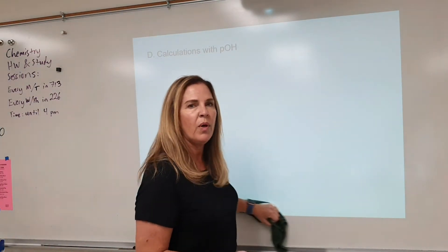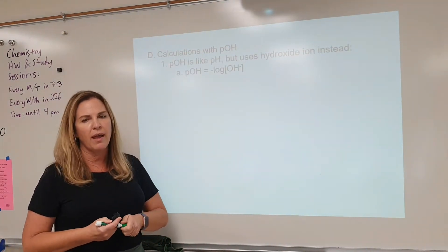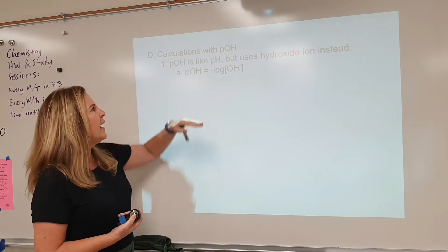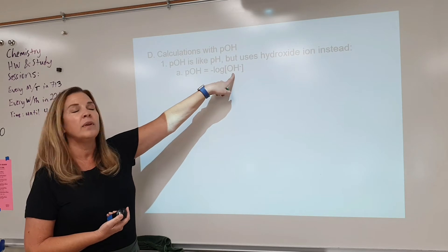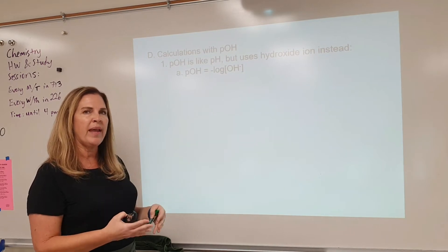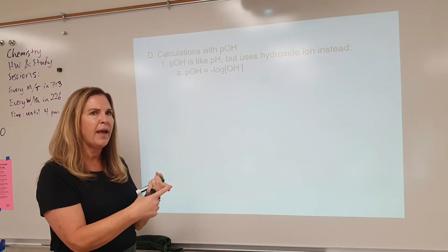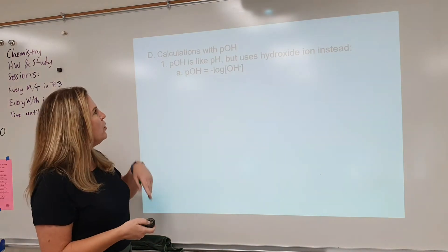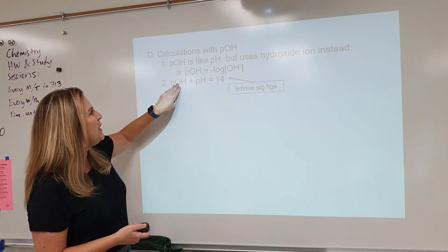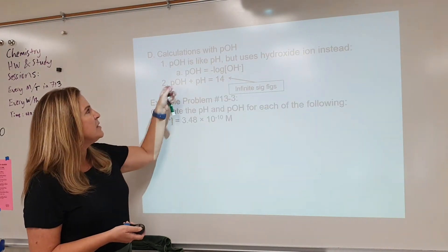Calculations with pOH. There is another scale — the pOH scale — but it's not about hydrogen ion; it's about the hydroxide ion. pOH equals the negative log of the hydroxide ion concentration. You have to pay attention to the information given: am I given hydrogen ion or am I given hydroxide ion? Another important calculation is that pOH and pH are tied together and add up to 14.